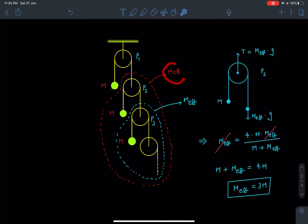From the next mass till infinity again, its effective mass is going to be the same because pulleys are infinite in number. So even in this case that mass is going to be M_eff.